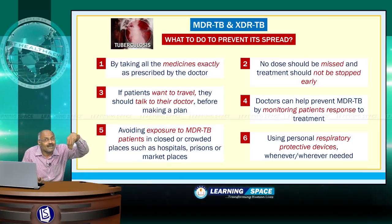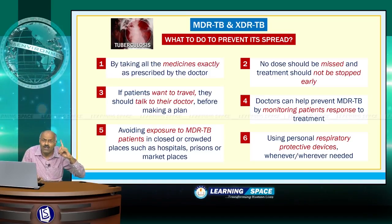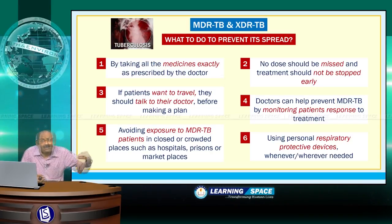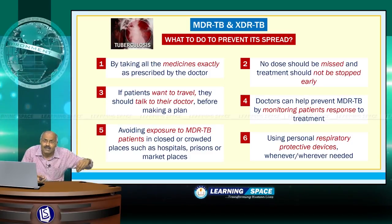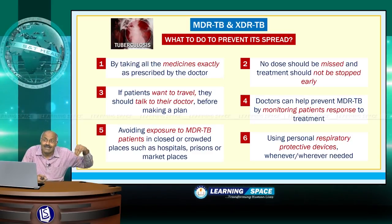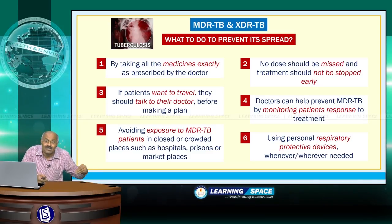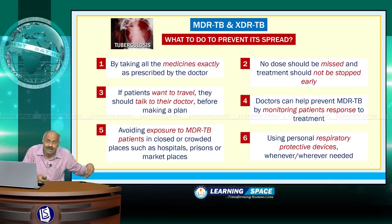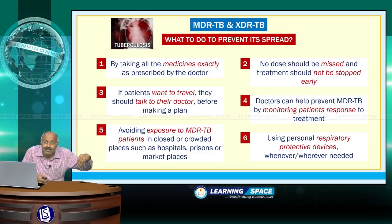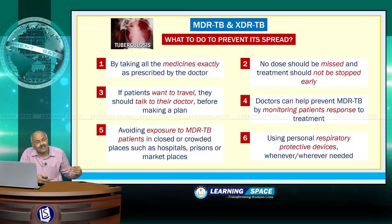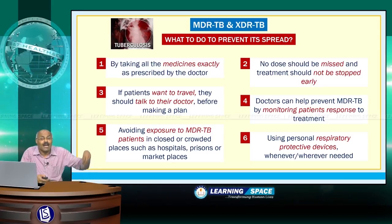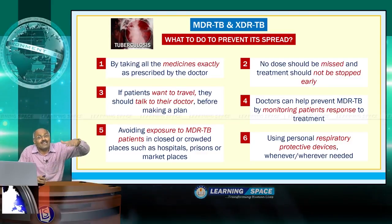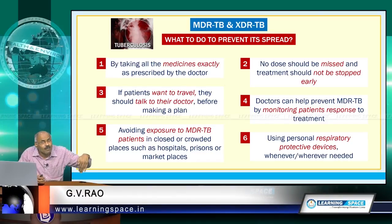To prevent the spread of MDR-TB and XDR-TB: take all medicines exactly as prescribed by the doctor; no dose should be missed and treatment should not be stopped early; patients who want to travel should talk to their doctor before making a travel plan. Doctors can help prevent MDR-TB by monitoring patients' response to treatment. Avoid exposure to MDR-TB patients in closed or crowded places such as hospitals, prisons, or marketplaces. Use personal respiratory protective devices wherever needed, especially for medical professionals and persons in contact with MDR-TB and XDR-TB patients. Most importantly, increase awareness levels of the population, especially in underdeveloped and developing countries.